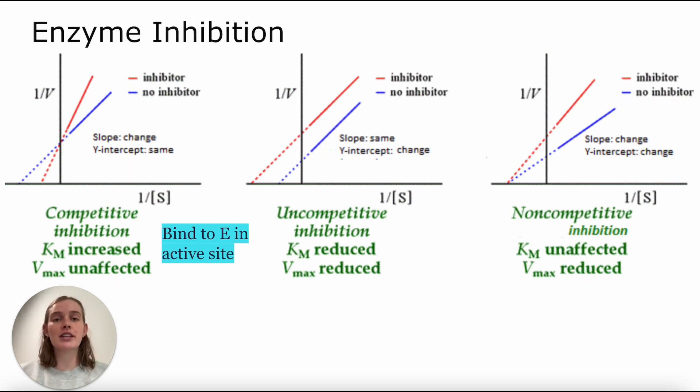Our next one over in the middle is uncompetitive inhibition, and that is when our inhibitor binds to what we call the ES-complex. So it only binds after our substrate has bound the enzyme. Here, instead of seeing a change in slope, we see a change in the y-intercept. And in this case, we have a reduction in both Km and Vmax.